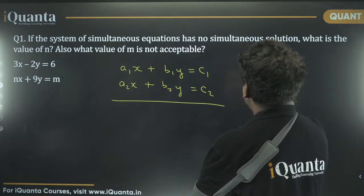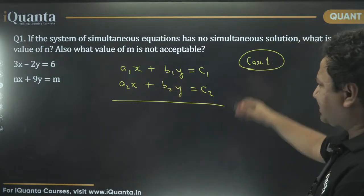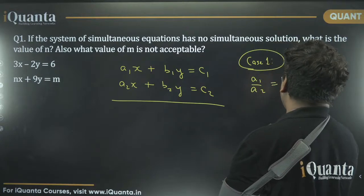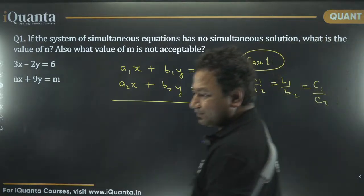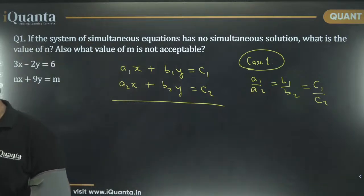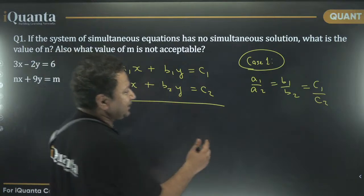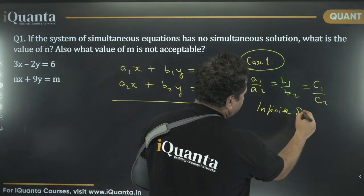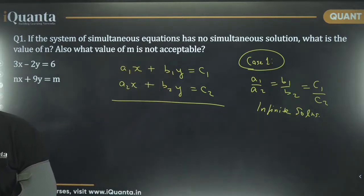Let us write about case 1. I know a lot of you can solve this question, but let us revise everything once. So, if a1 upon a2 is equal to b1 upon b2 is equal to c1 upon c2, everything is proportional. In this case, what will we get? Things will cancel out. So, basically, we will have infinite solutions.